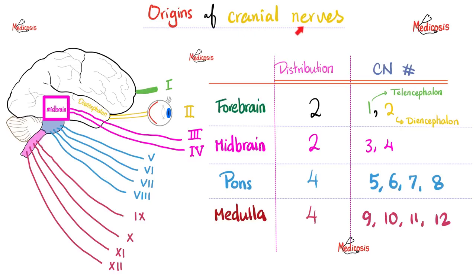How many cranial nerves do you have? The answer is 12 pairs. 1 and 2 come out of the forebrain, 3 and 4 out of the midbrain, 5 through 8 from the pons, and 9 through 12 from the medulla. So the trigeminal nerve comes out of the pons.